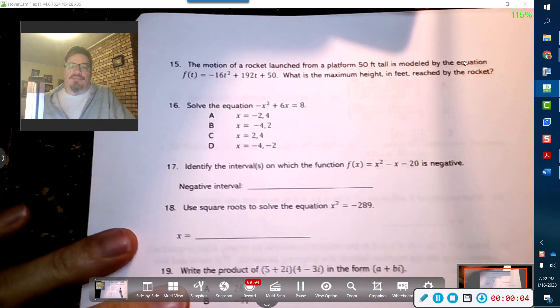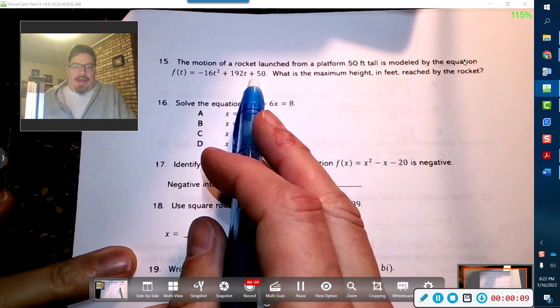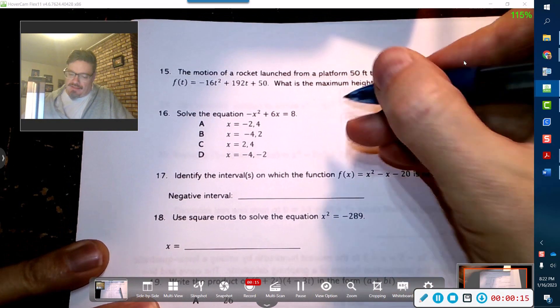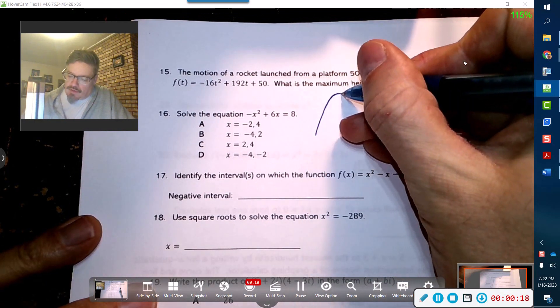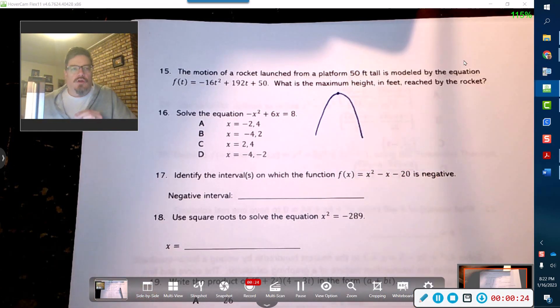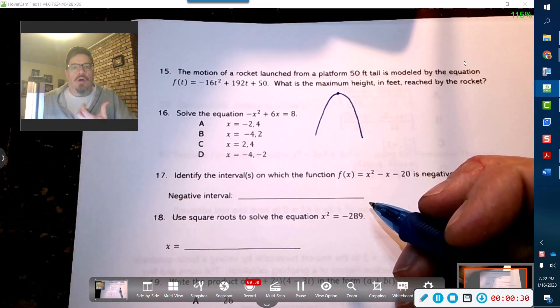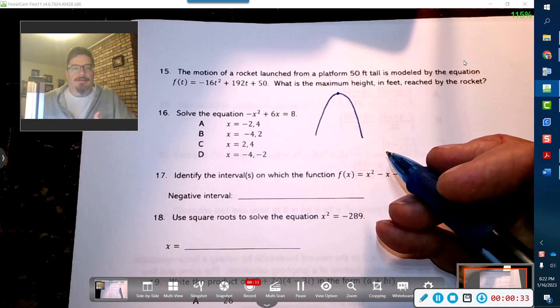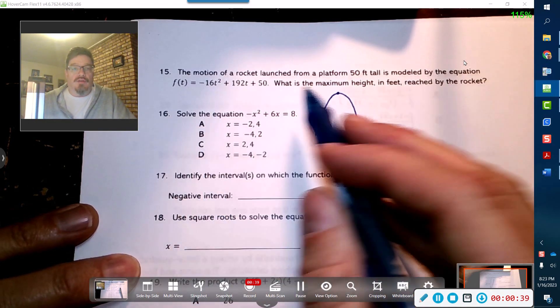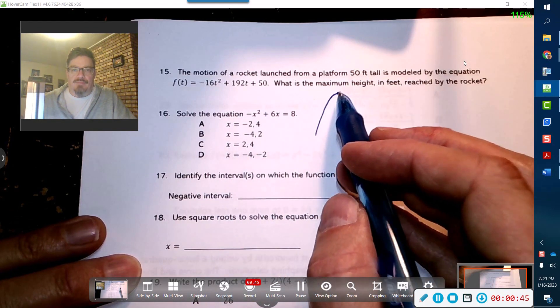Problem 15: The motion of a rocket from a platform 50 feet tall is modeled by this equation. What is the maximum height in feet reached by the rocket? To find maximum height, we're looking for this guy right there. Maximum height always occurs at the vertex. The reason is because all motion that has the effects of gravity on it is going to be parabolic in shape, so quadratics are the best for that. This guy is going to get launched from here and we need to find that maximum height, so this is going to require two things.